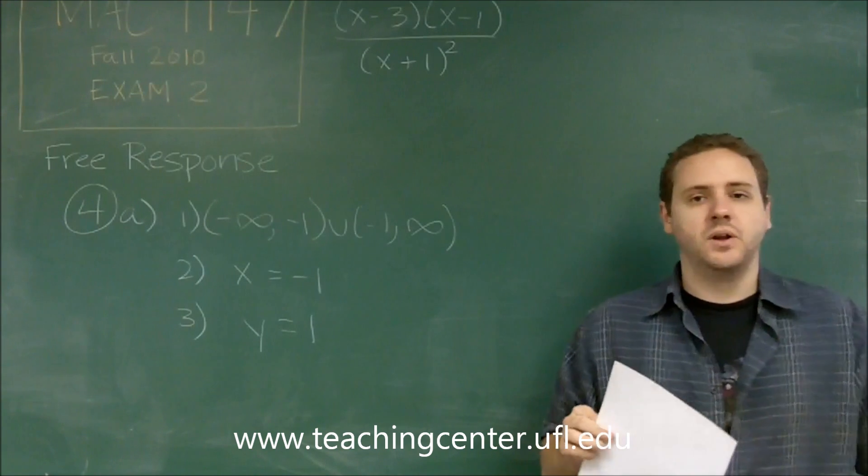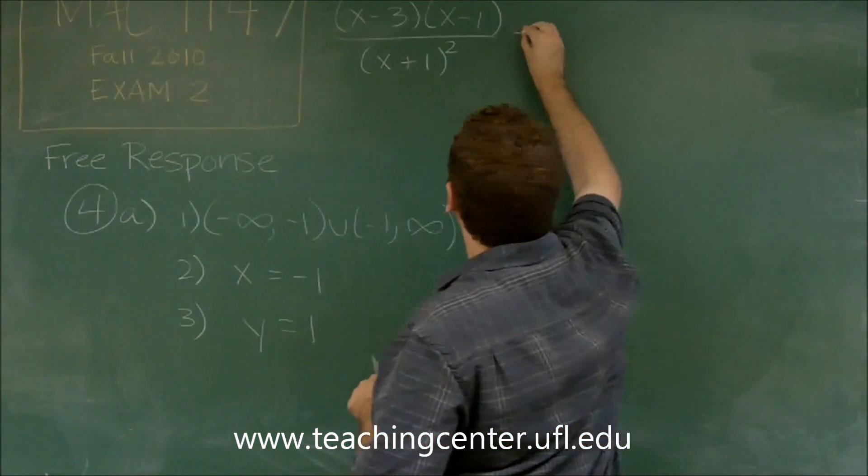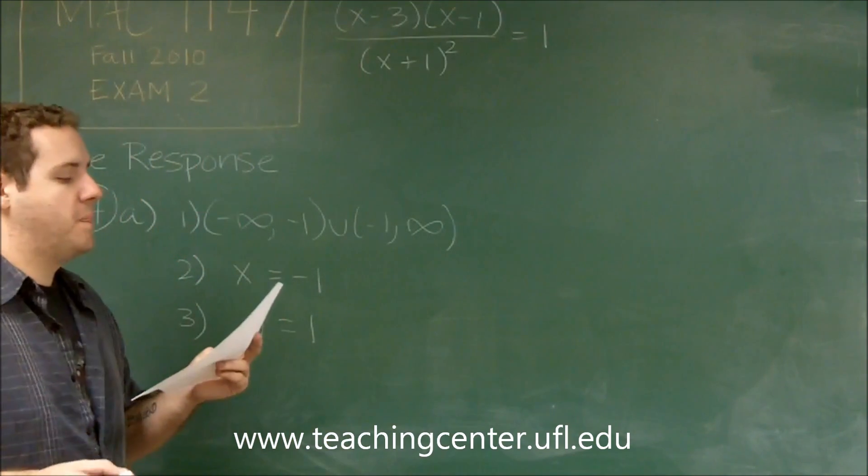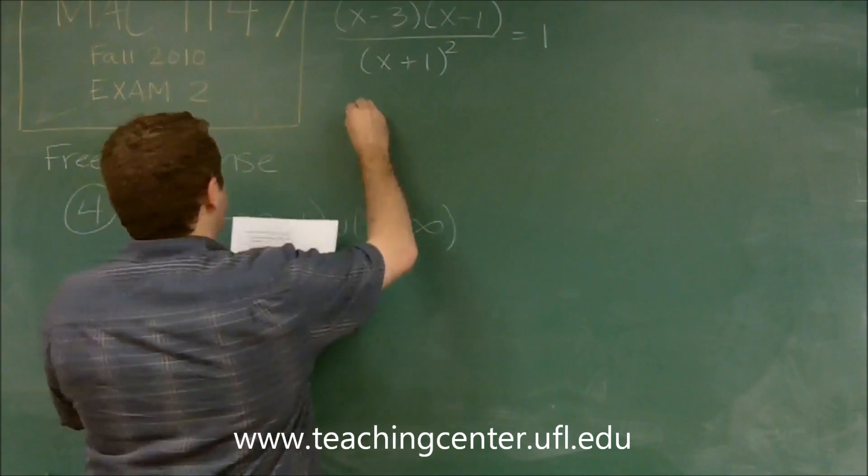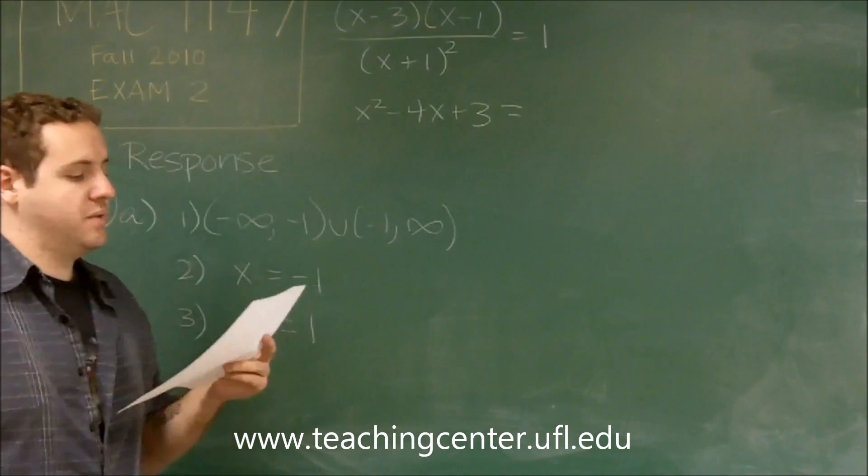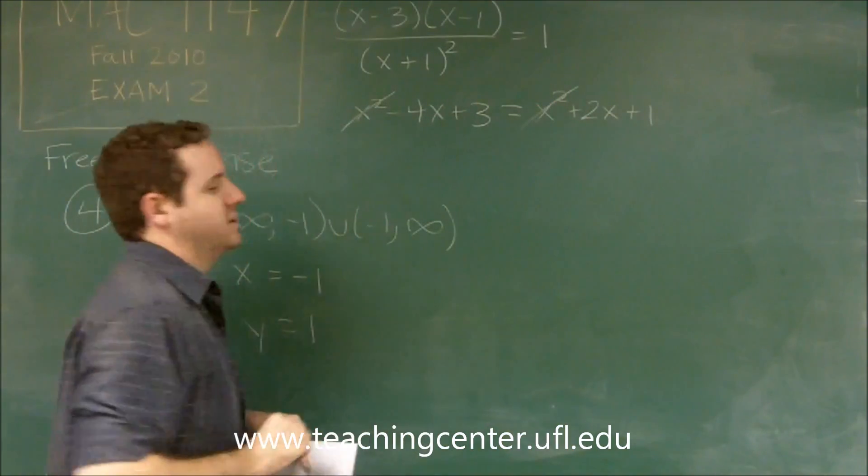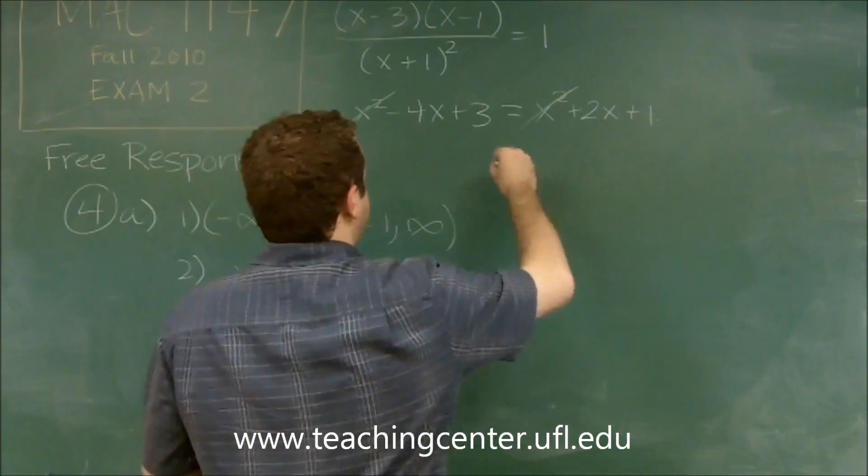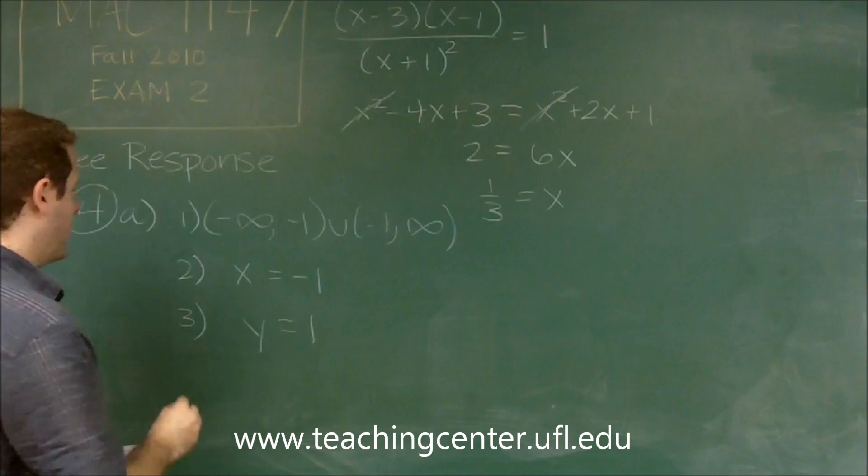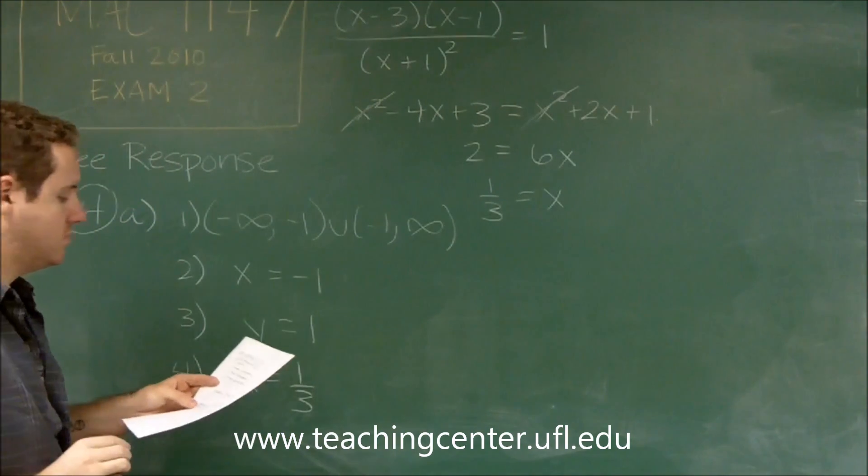Part 4 says the graph crosses its horizontal asymptote. The way you can check that is set your function equal to the horizontal asymptote and see if you get any solutions. We're going to set this equal to 1 and see if we get anything. We're probably going to want to put the function back into its expanded form. We have x squared minus 4x plus 3. We multiply everything on the bottom over to the other side, so we get equals x squared plus 2x plus 1. The x squareds cancel out. If we add 4x and subtract 1, we get that x equals 1 third. The graph does cross its horizontal asymptote at x equals 1 third.